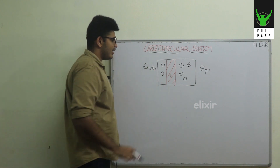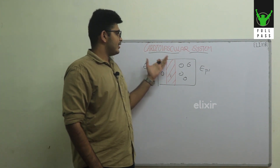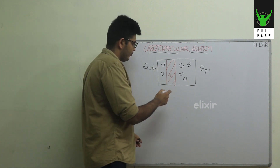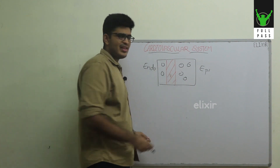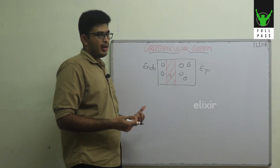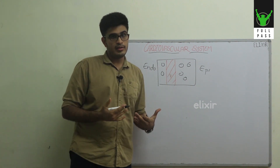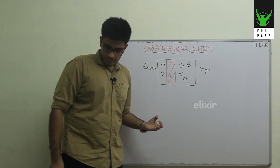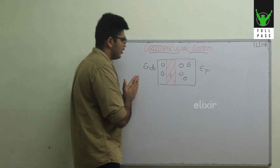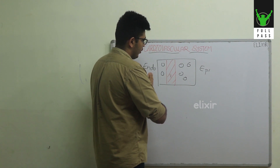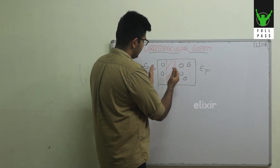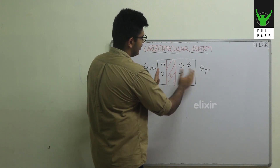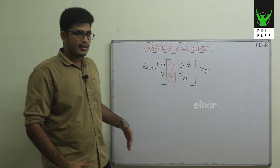The second point: the vessels in the endocardium and subendocardium are thinner and hence more compliant than the vessels in the epicardium. Being thinner and more compliant, they yield more to pressure. Additionally, the compression is not uniform — the compression is more pronounced in the endocardium and subendocardium, and less in the epicardium.